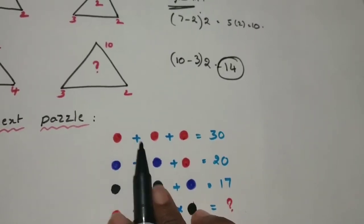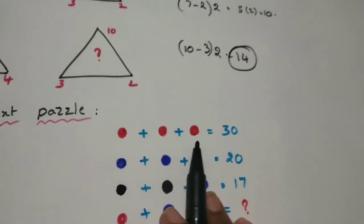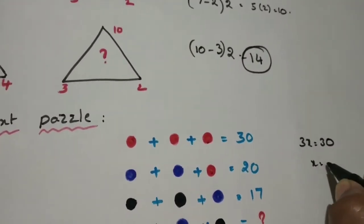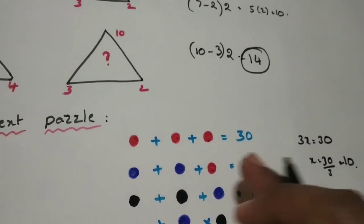So if you treat it as x, x, x, how much sum of these? 3x is equal to 30, then x is equal to 30 by 3, that is nothing but 10. That means single dot x value is 10.